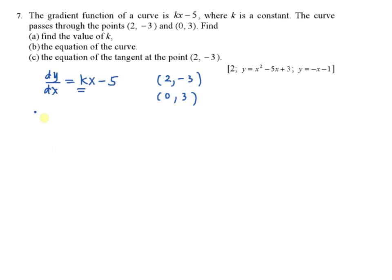The reason is you have to substitute this as x and y. So let's see, we try to find the equation of curve, that is integration of the gradient function. So this equal to kx squared over 2 minus 5x plus c. So in this case, to be easier, you try to substitute x equal to 0, y equal to 3.